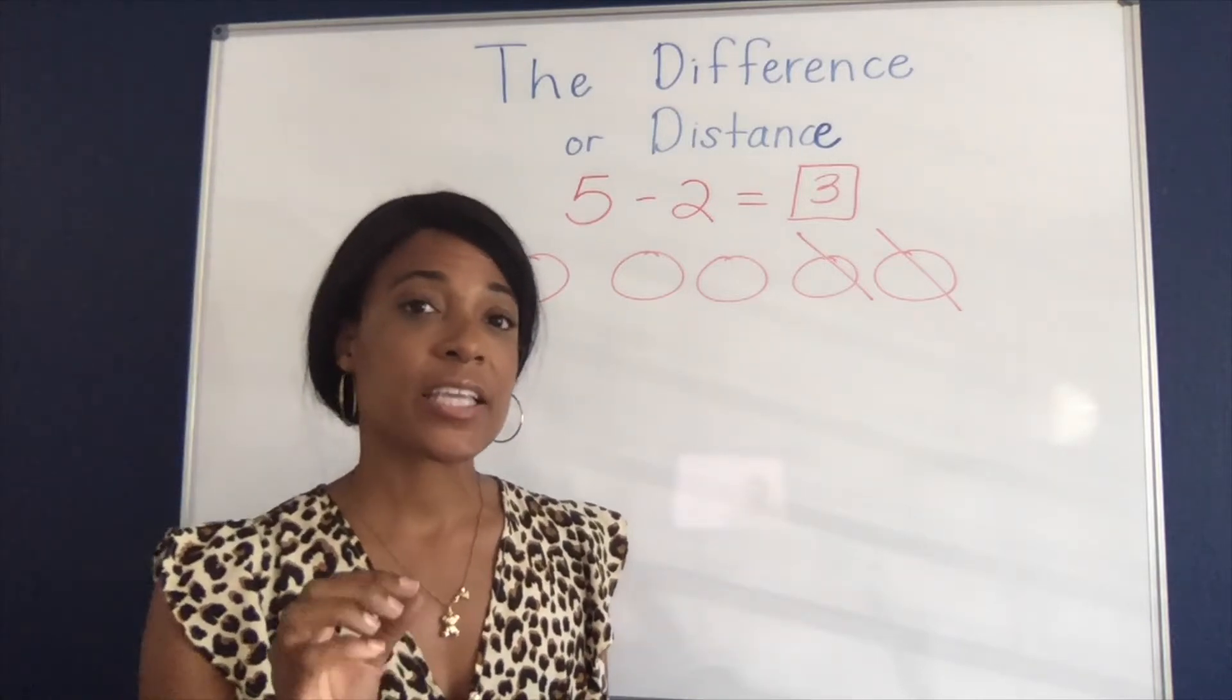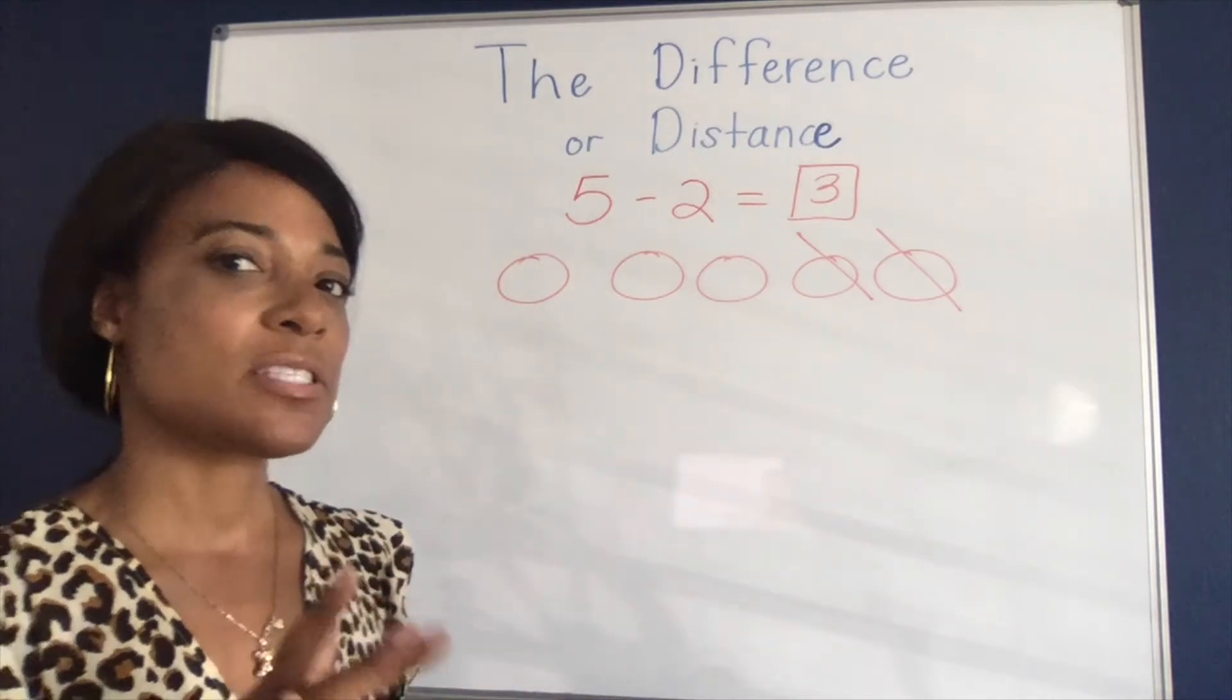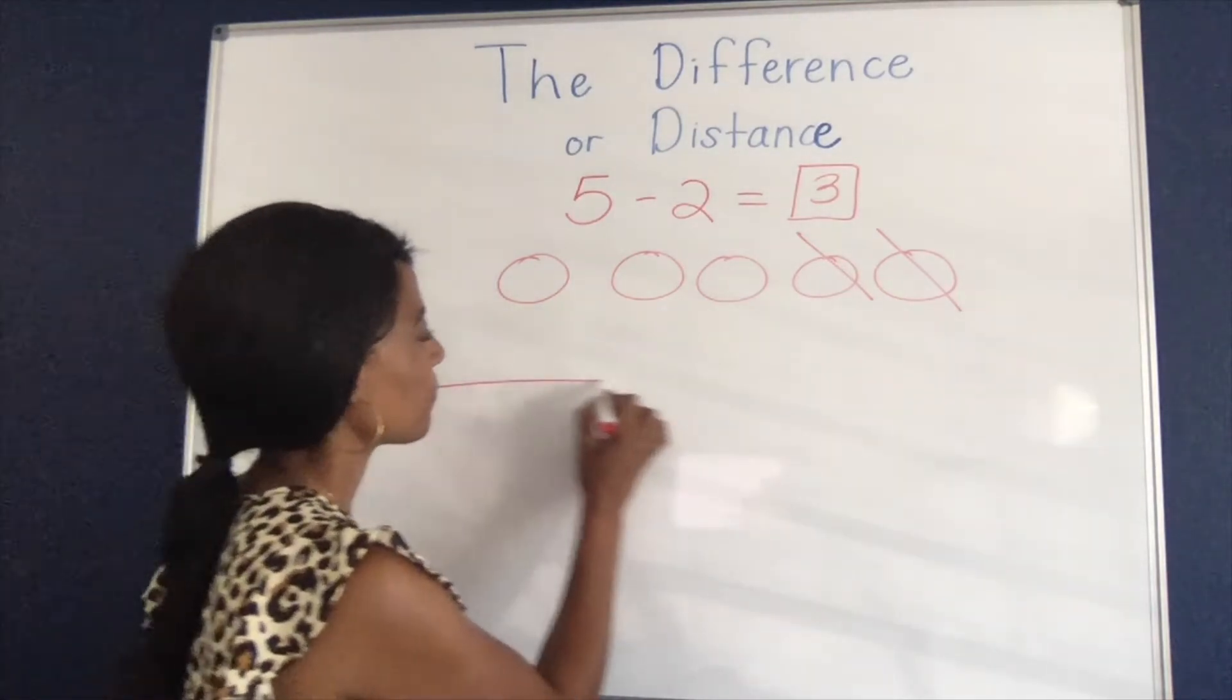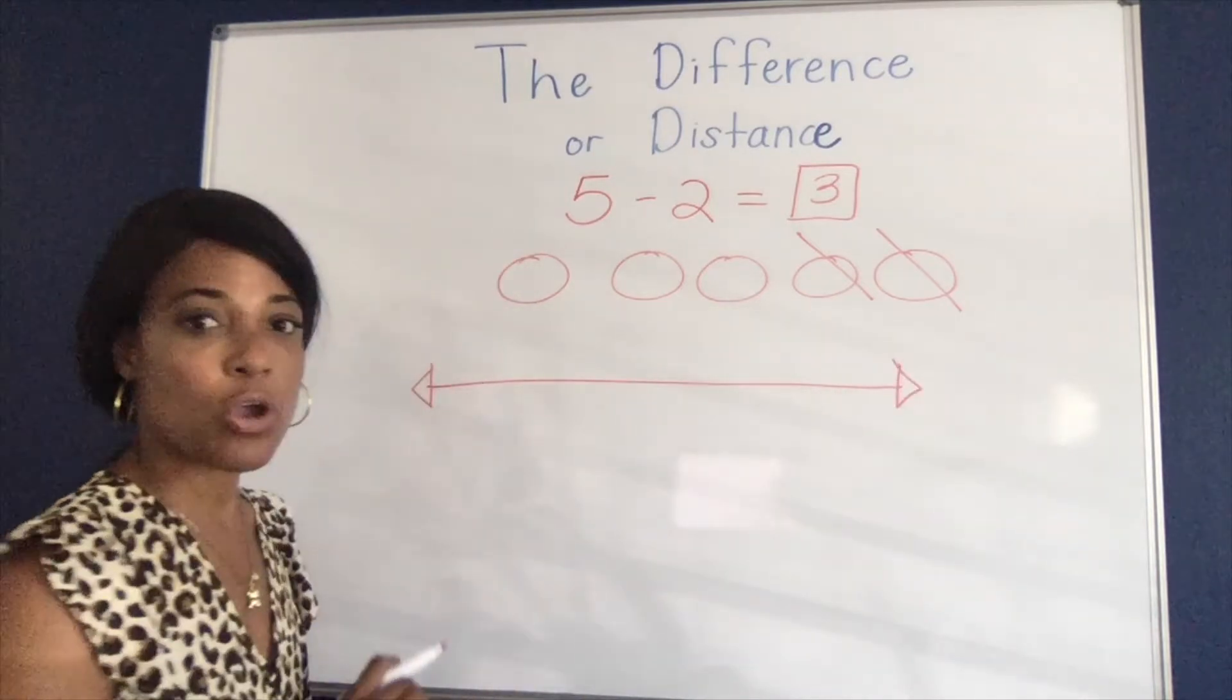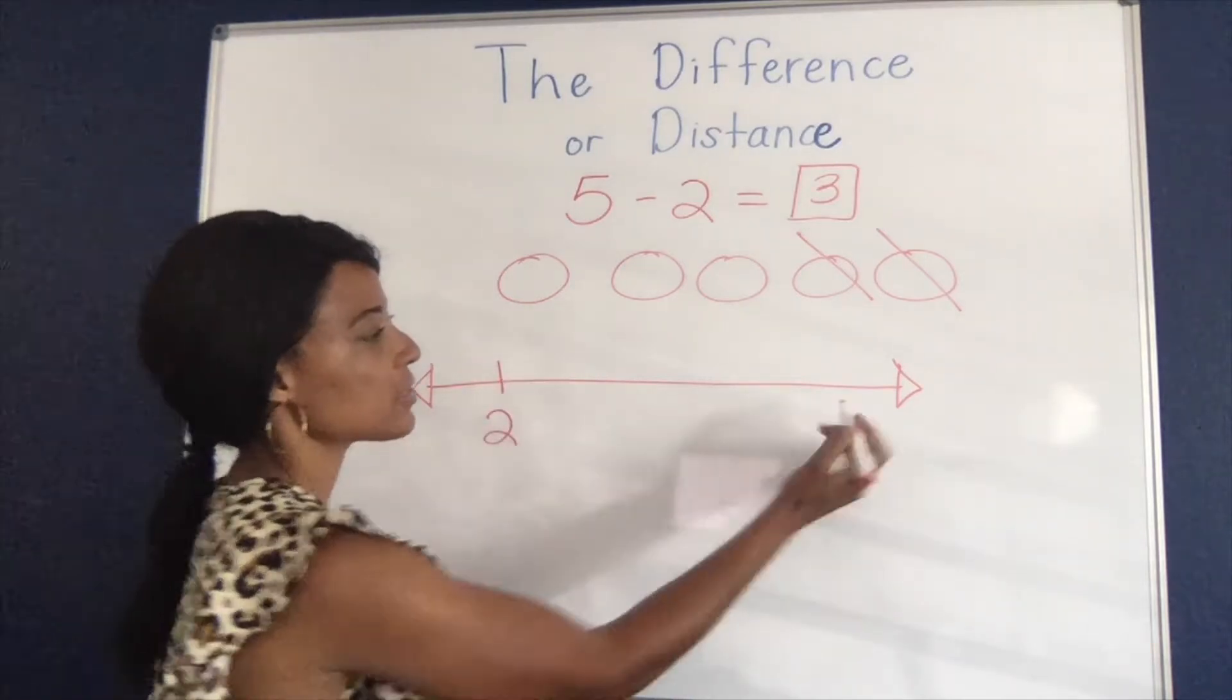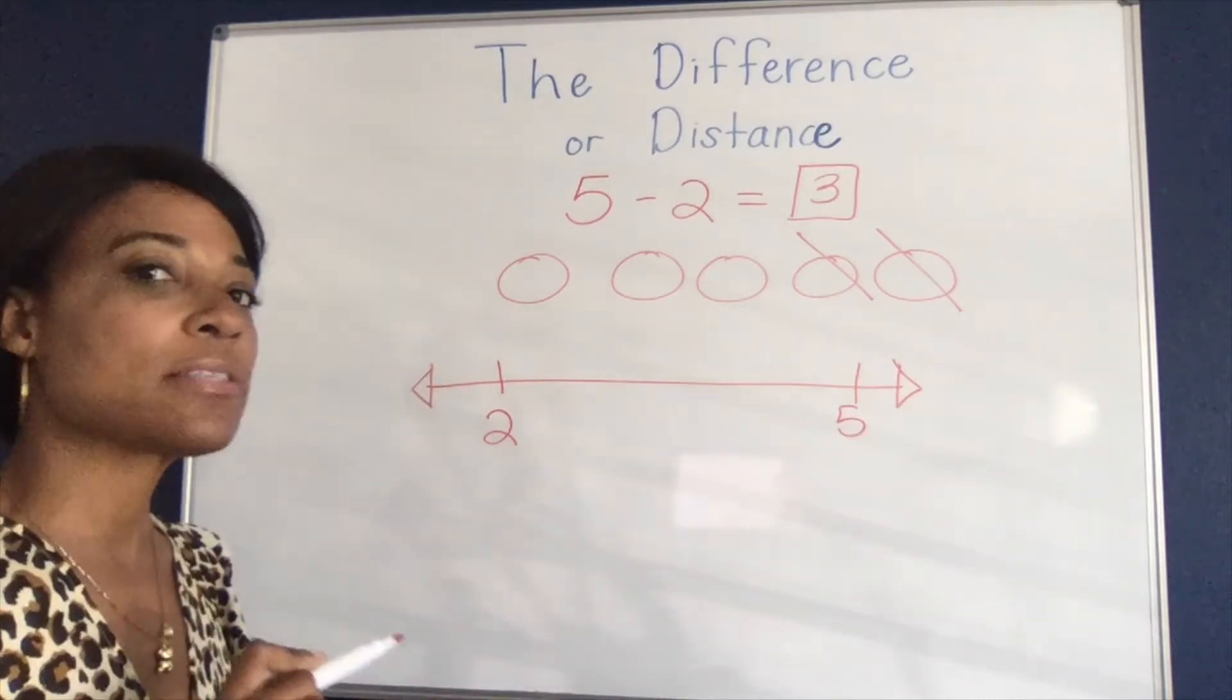I like to introduce the open number line starting at about the end of first grade for students to use as a tool for solving. So for example, it would look like this. I would use an open number line so there's no numbers on it and the student would add the numbers, and they would have two on the left and five on the right, and they could use a couple of different ways of solving.